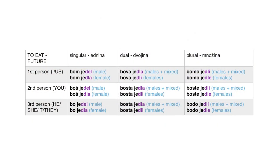Now all we have left is the future tense. For 'to eat' in future tense, we use the conjugated verb 'to be' in future tense as the first word, and the second word is 'je' with the same add-on as in past tense. First person singular is 'bom jedel' or 'bom jedla'. Second person singular is 'boš jedel' or 'boš jedla'. Third person singular is 'bo jedel' or 'bo jedla'. First person dual is 'bova jedla' or 'bova jedli'. Second person dual is 'bosta jedla' or 'bosta jedli'. Third person dual is 'bosta jedla' or 'bosta jedli'. First person plural is 'bomo jedli' or 'bomo jedle'. Second person plural is 'boste jedli' or 'boste jedle'. Third person plural is 'bodo jedli' or 'bodo jedle'.